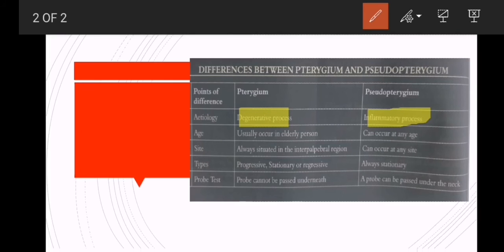On the basis of age, pterygium usually occurs in elderly persons, while pseudopterygium can occur at any age.